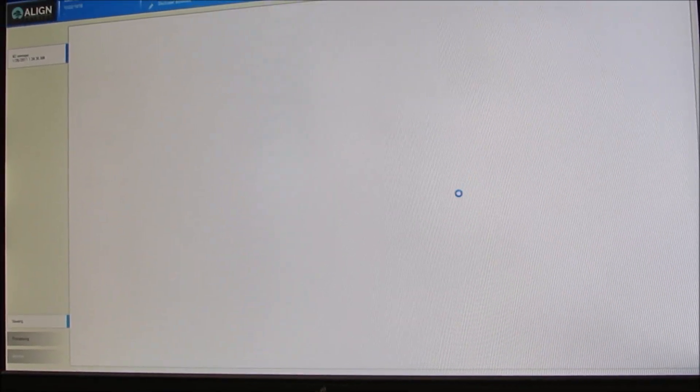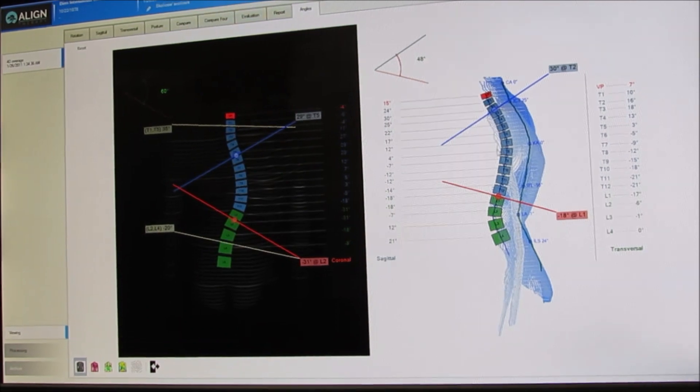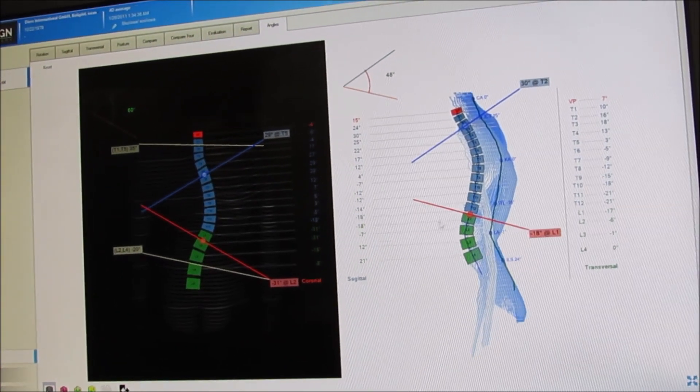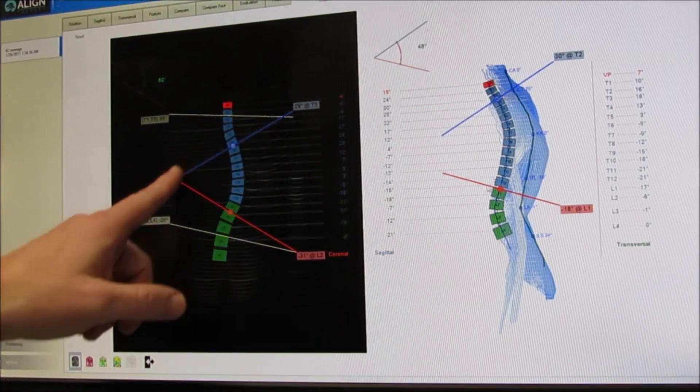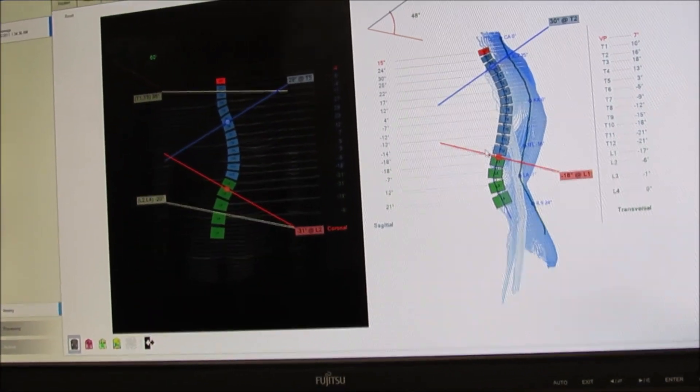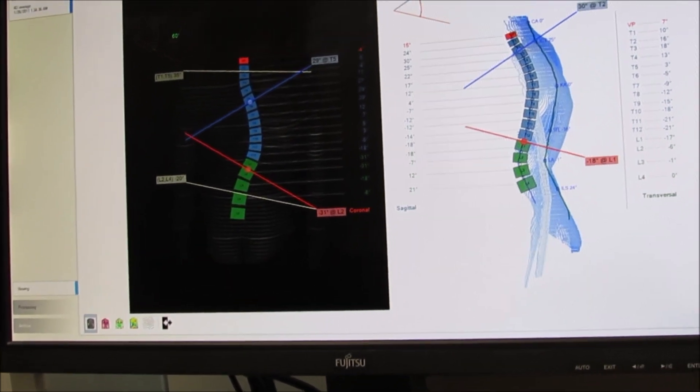It can estimate scoliosis angles. It doesn't do a Cobb angle, which is an x-ray measurement of the curve, because we're not actually seeing the spine. So it measures, it estimates this curve here at 60 degrees. So we can see how that changes over time as well.